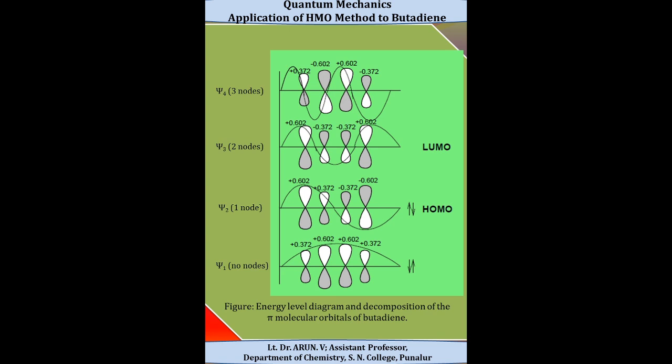We can now construct the Hückel molecular orbital energy level diagram for the butadiene molecule. The energy levels from lowest to highest are psi1, psi2, psi3, and psi4. In psi1 there are 0 nodes; in psi2 there is 1 node; in psi3 there are 2 nodes; and in psi4 there are 3 nodes. There are 4 pi electrons in total, and these 4 electrons occupy the two lowest molecular orbitals, psi1 and psi2.